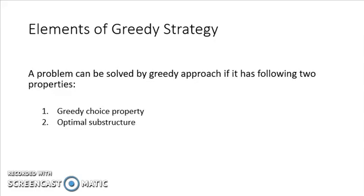Let's see when a problem can be solved using a greedy approach. For a problem to have a greedy solution it needs to satisfy two properties: the first one is the greedy choice property and the second one is the optimal substructure property. We'll discuss these two properties one by one.